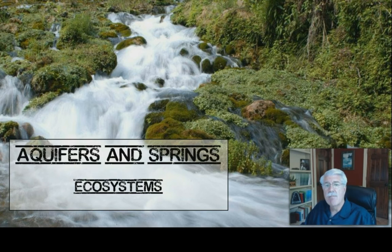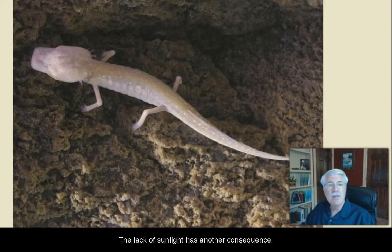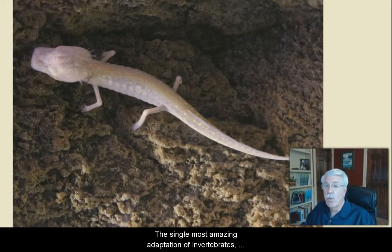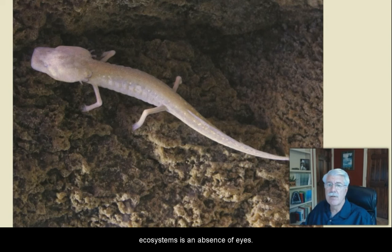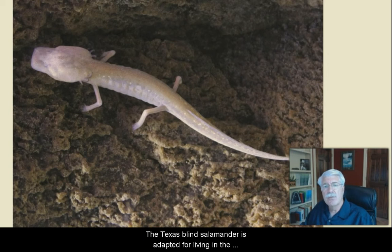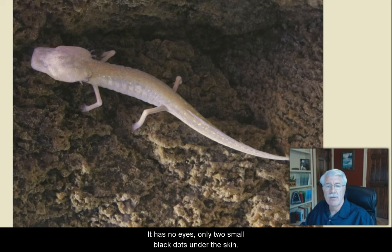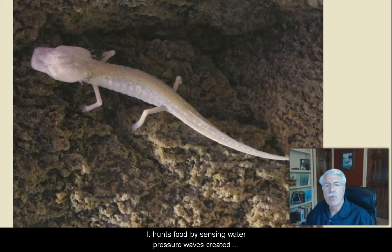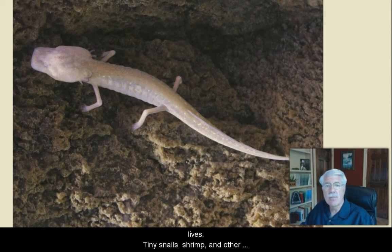This lack of sunlight has another consequence. In fact, the single most amazing adaptation of invertebrates, fish, and amphibians to the dark underground aquatic ecosystem is an absence of eyes. Here we see the Texas blind salamander. It's adapted for living in these water-filled caves of the Edwards Aquifer. It has no eyes — it does have two small black dots under the skin where eyes would normally be — yet the blind salamander is an active predator. It hunts food by sensing water pressure waves that are created by prey in the underground waters where it lives. There are no waves or great currents there, so even the slightest movement of water can be detected by these little predators. Tiny snails, shrimp, and other aquatic invertebrates make up its diet.